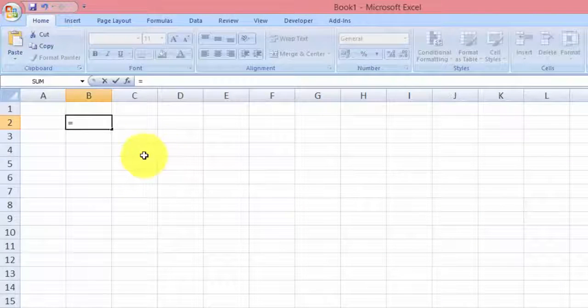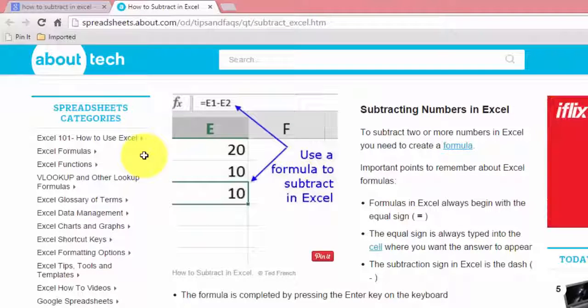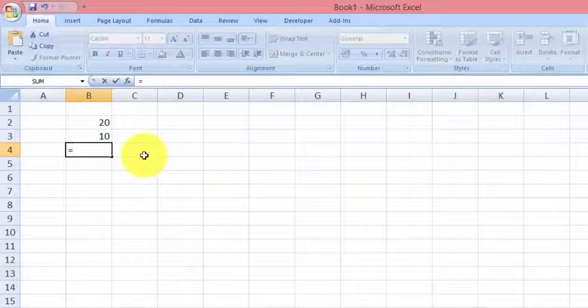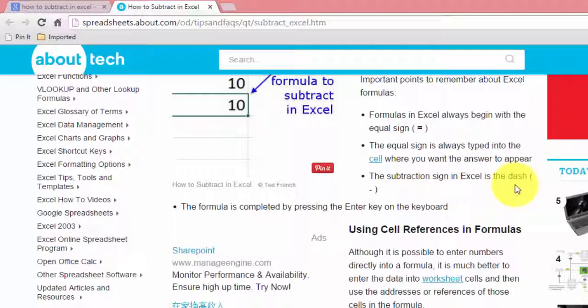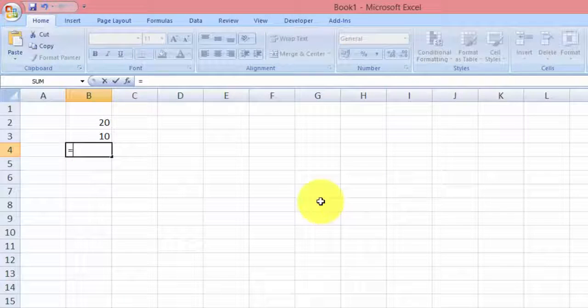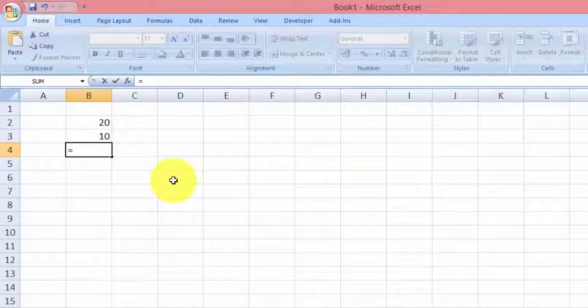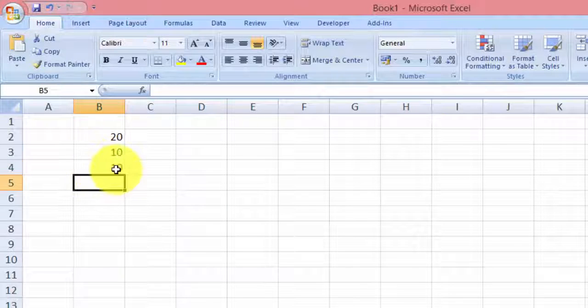Then type in the cell where you want the answers to appear. Here they have a 20 and a 10. So here I put equal sign and then subtract with a dash. So we press this one, yes, 10. You see that the formula was equal, step 20 minus 10.